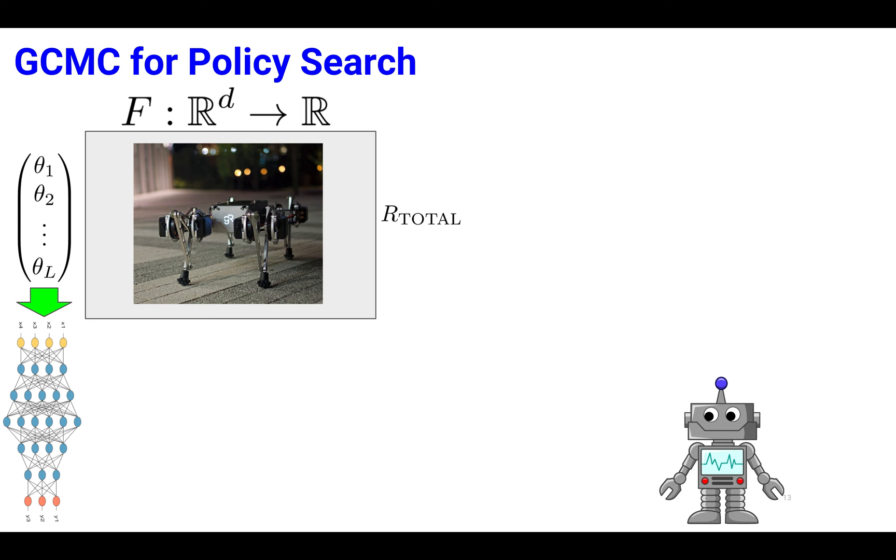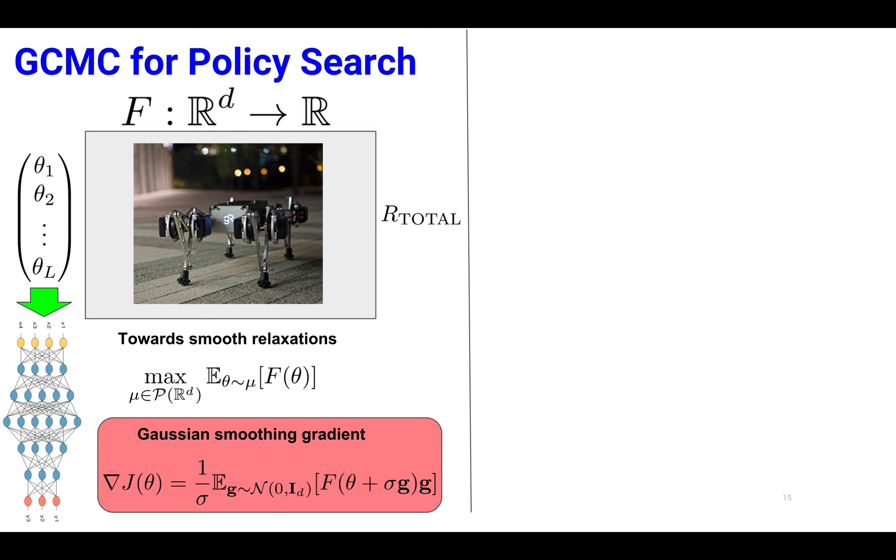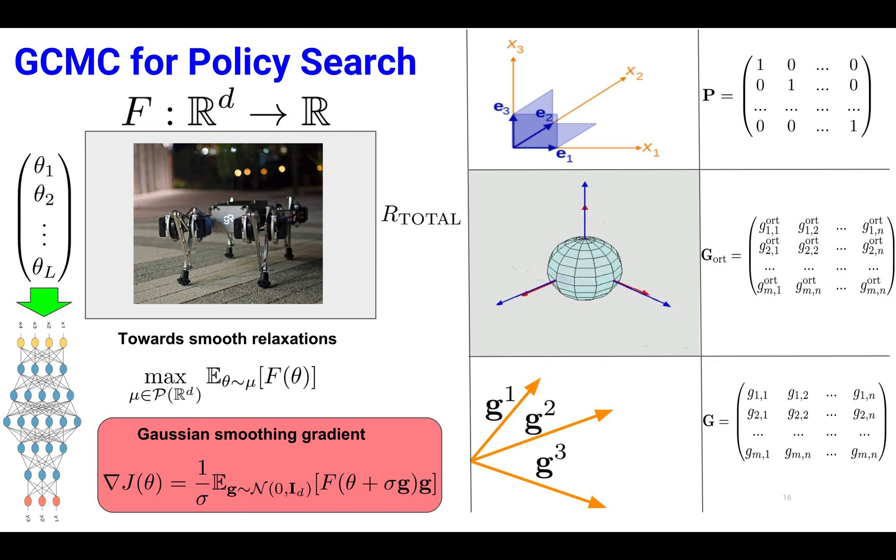Smooth relaxations of these black box functions lead to formulas for gradients given by expectations that can in turn be approximated via different gradient sensing techniques. Among them are standard FD method, method based on pairwise orthogonal sensing directions, and independent Gaussian directions.